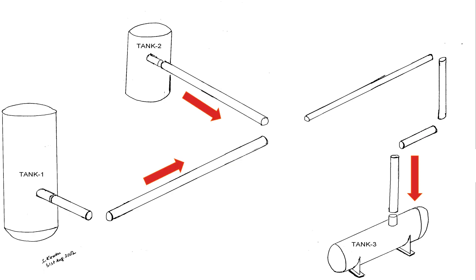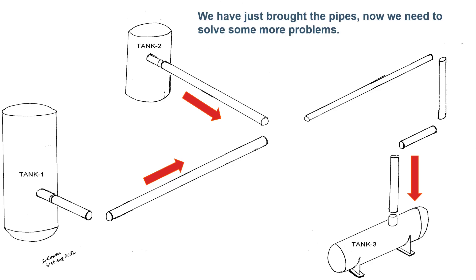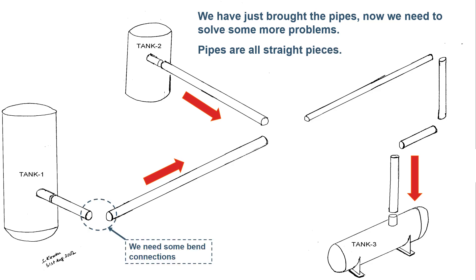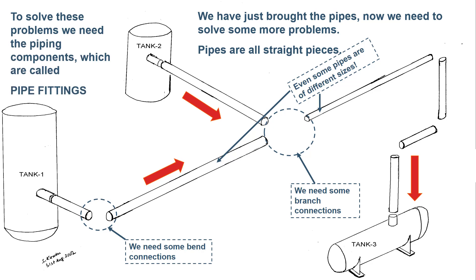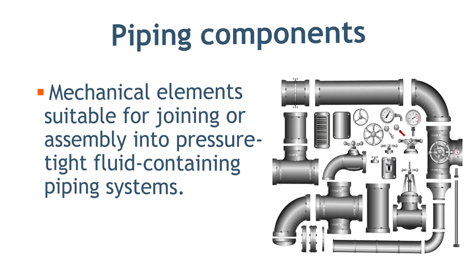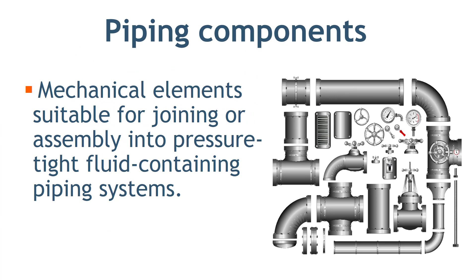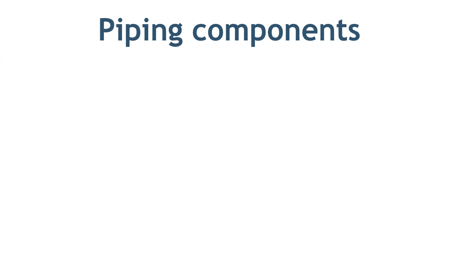Pipes are just straight pieces. Only pipes will not solve our problem — we need something more. We need some bends to connect the pipe coming from different directions. We also need some branch connections that can connect different sizes of pipe. These components are called pipe fittings. Let's first define what pipe components are.